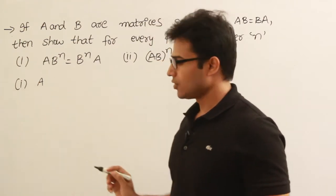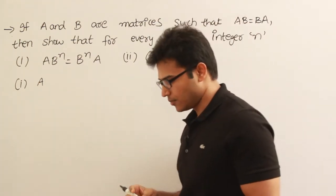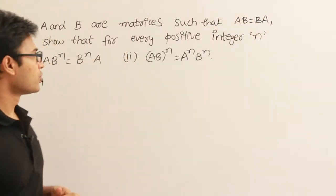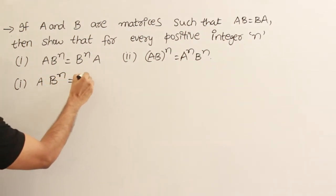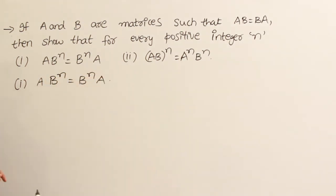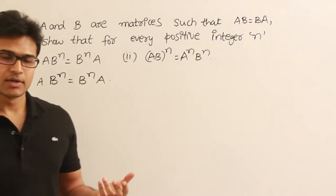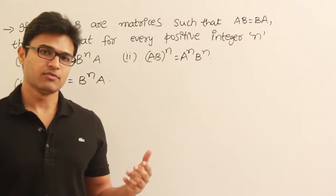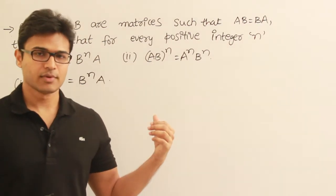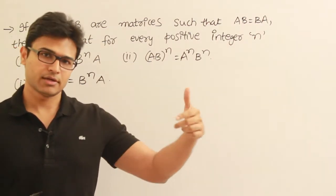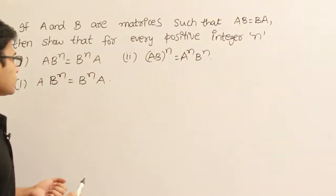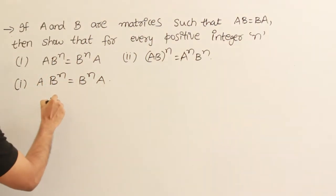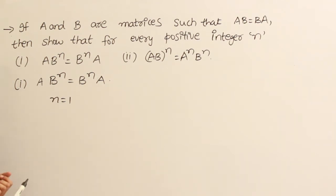Given fact is that AB equals BA, which means A and B commute, and then we are supposed to prove that A into B power n should be equal to B power n into A. How induction works is we take a very small value of n, see that it holds true, and then go on to larger values. So let's see what happens when n equals 1.